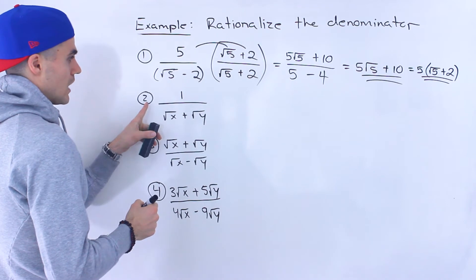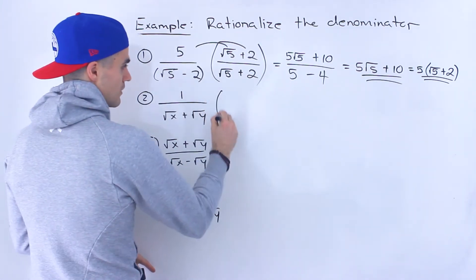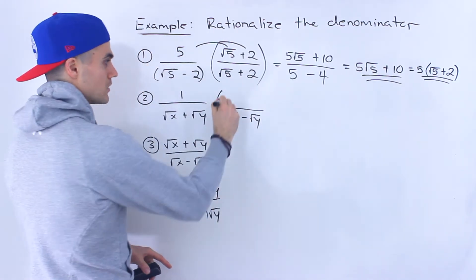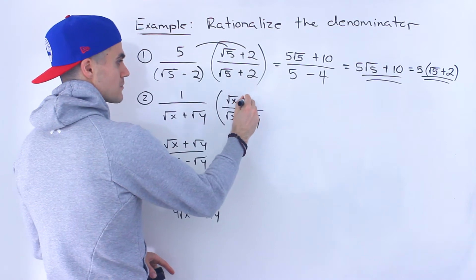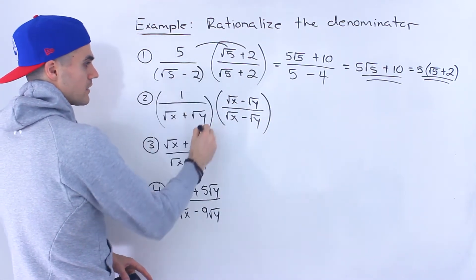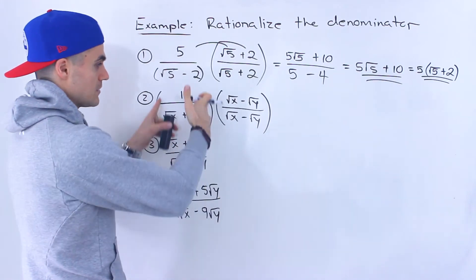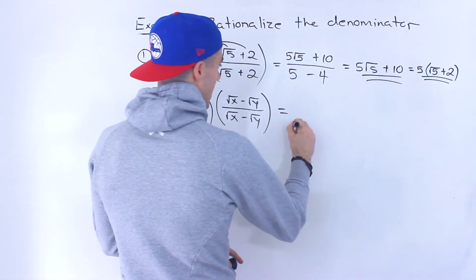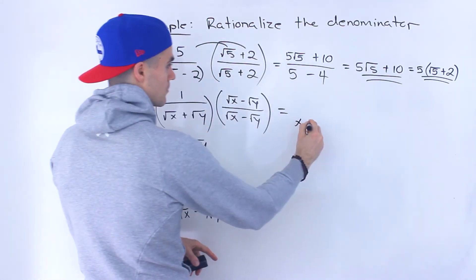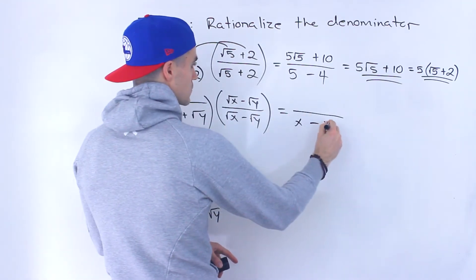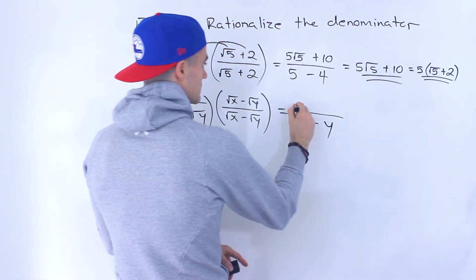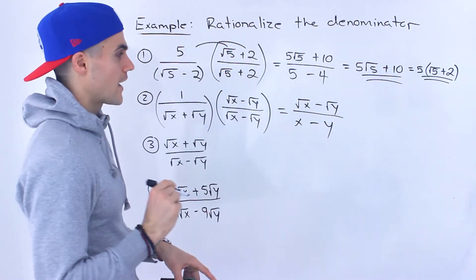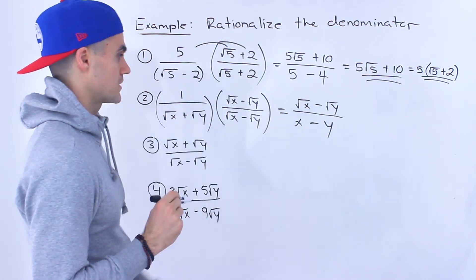Number two: we got one over root x plus root y. Same thing — multiply by the conjugate root x minus root y. Change that sign in the middle and multiply the top by the same thing, so it's like multiplying by one. Root x times root x gives us x, then we have a minus in the middle, root y times root y gives us y. One times the conjugate gives us root x minus root y in the numerator. We can't simplify that any further, so that's the final answer.